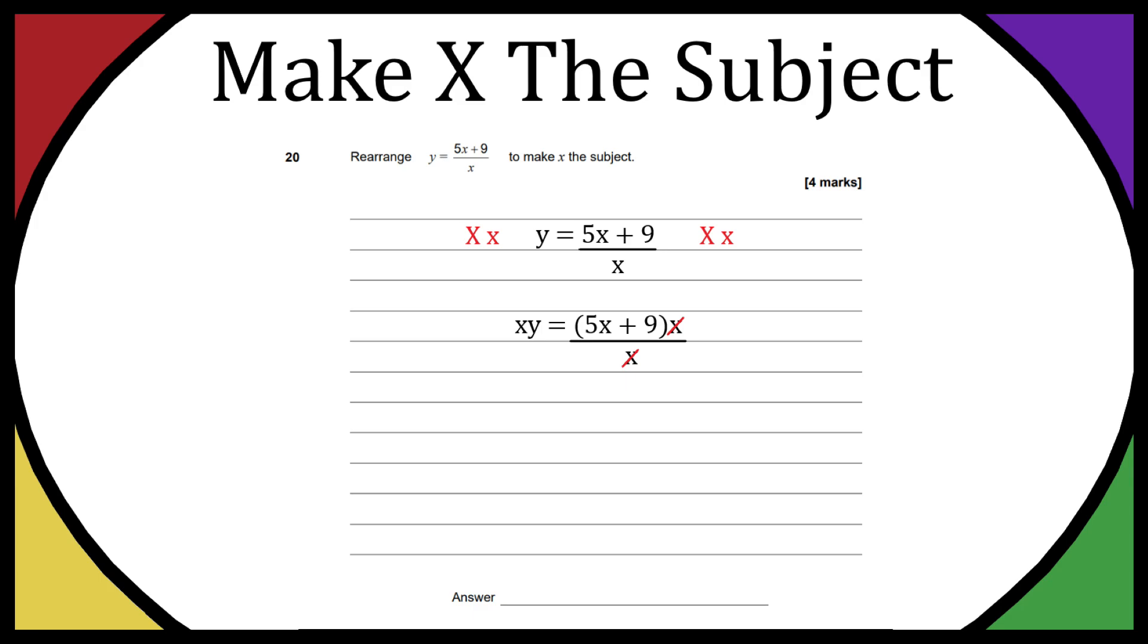So let's subtract 5x from both sides. That's going to give us xy minus 5x equals 9 because on the right hand side it'd be 5x minus 5x plus 9 so they're going to cancel out. So now we have xy minus 5x equals 9.